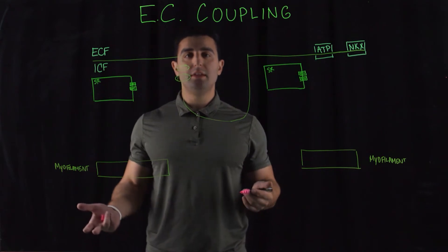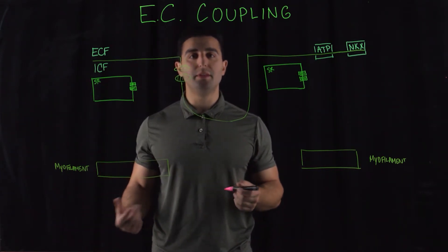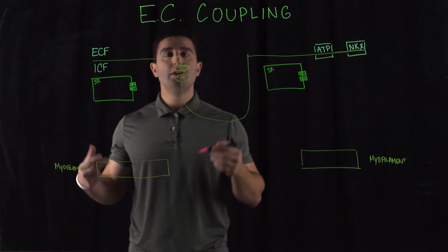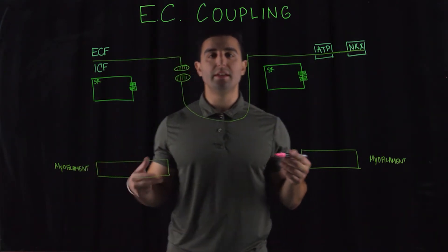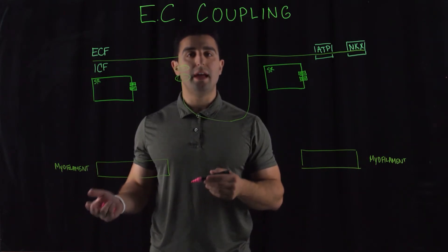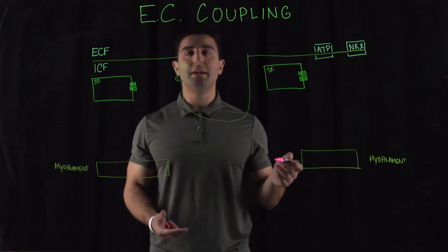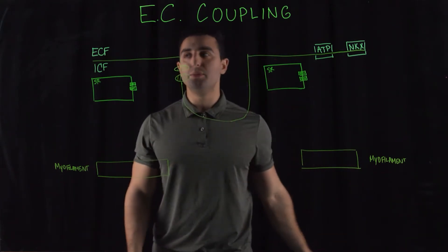Unlike the skeletal system where it's innervated by neurotransmitters generated from the nervous system, the cardiovascular system is regulated auto-rhythmically by the pacemaker, and contractions are generated via that mechanism through this EC coupling.